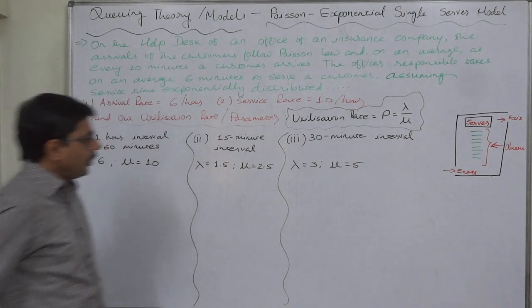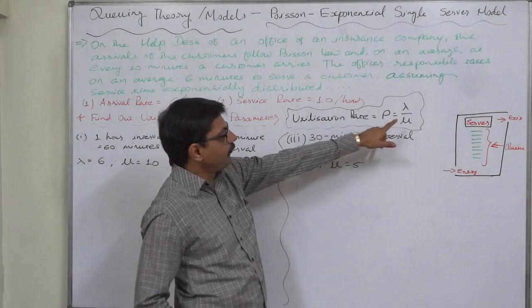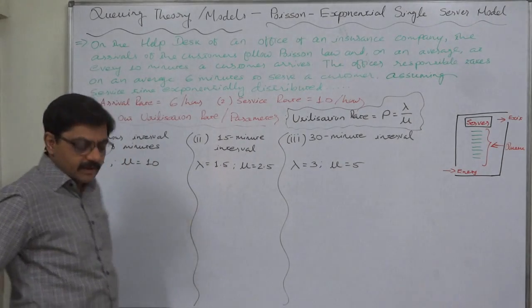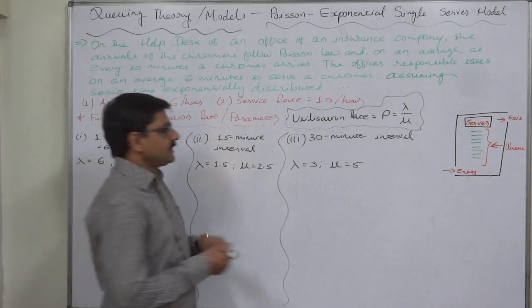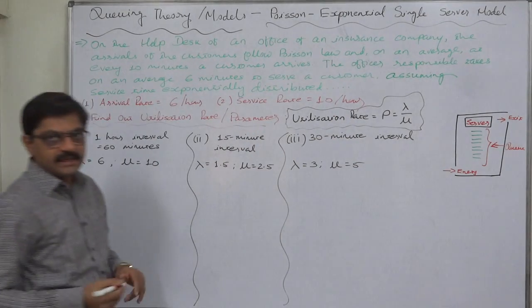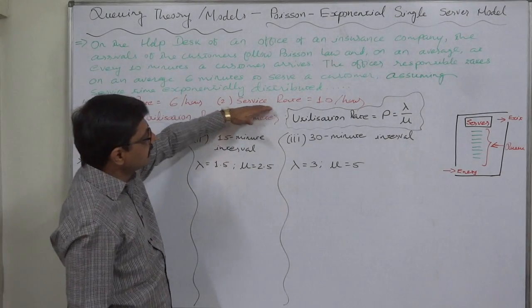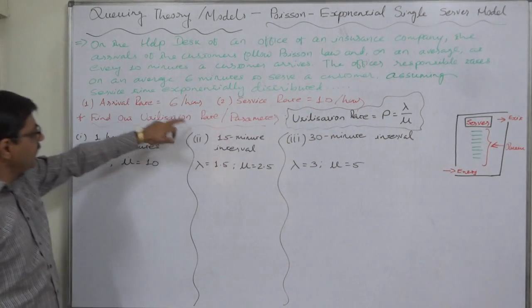Now we are going to discuss the calculation of utilization rate, that is rho, and the formula is lambda upon mu—that is, arrival rate divided by service rate. This also shows the capacity utilization rate: how much capacity or installed capacity is used. Because the capacity of the server is 10 customers servicing per hour, while they are actually servicing six customers per hour, this is the situation at this particular point of time.